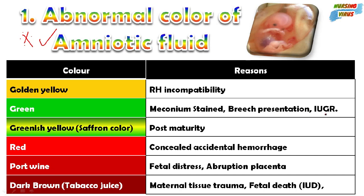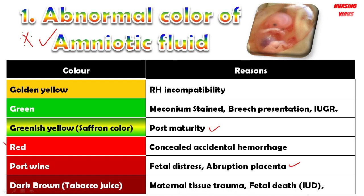If the amniotic fluid is greenish-yellow or saffron color, that indicates post-maturity. If it is completely red color, that indicates concealed accidental hemorrhage, port wine, fetal distress, or it may indicate abruptio placentae. If it is dark brown color or tobacco juice appearance, that is maternal tissue trauma or fetal death — intrauterine death. These are the disorders commonly asked in previous examinations.